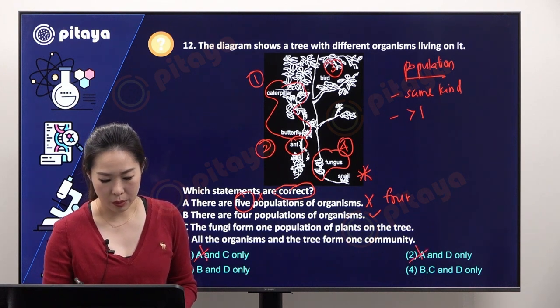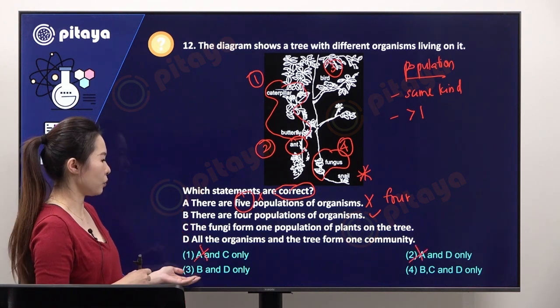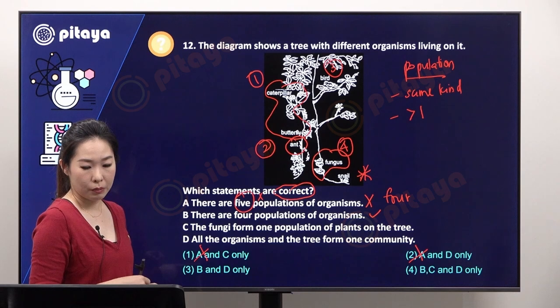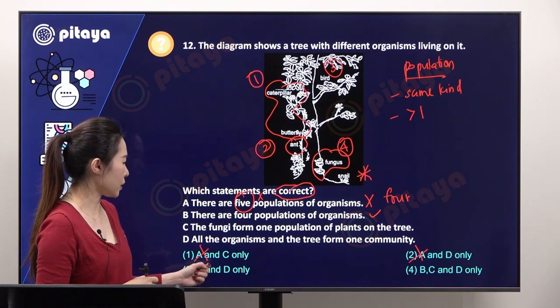Eliminating A, we have either three or four as the answer. Between three and four is whether we should choose C.